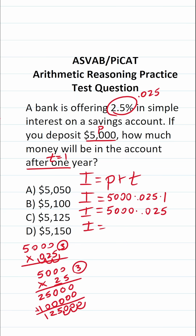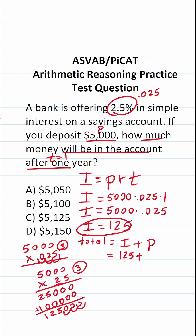After a year, we're going to earn $125 in interest. But this question wants to know how much money will be in the account in total. To calculate the total, we take our interest earned and add it to our principal. That's $125 in interest plus the $5,000 we deposited. 5,000 plus 125 is 5,125, so we're going to have $5,125 in this account after one year.